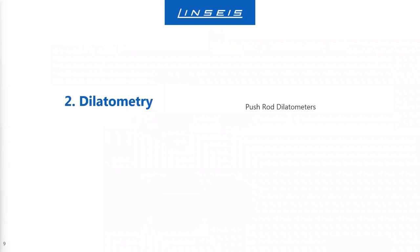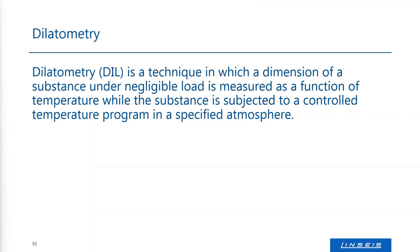A big field where hydrogen is applied is our dilatometers. We have more or less two kinds of dilatometers: pushrod dilatometers and optical dilatometers. The pushrod dilatometers are standardized — there are ASTM norms and European norms describing the technique. It is essentially a technique in which the dimension of a substance is measured under a small load as a function of temperature or time in a specified atmosphere.